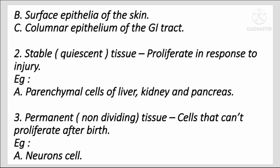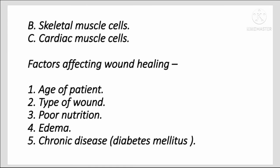The second group is stable or quiescent tissue, which proliferates in response to injury. Examples include parenchymal cells of the liver, kidney, and pancreas. The third group is permanent or non-dividing tissue — cells that cannot proliferate after birth. Examples include neuron cells, skeletal muscle cells, and cardiac muscle cells.